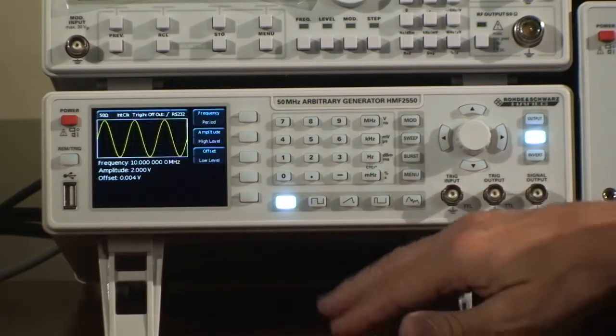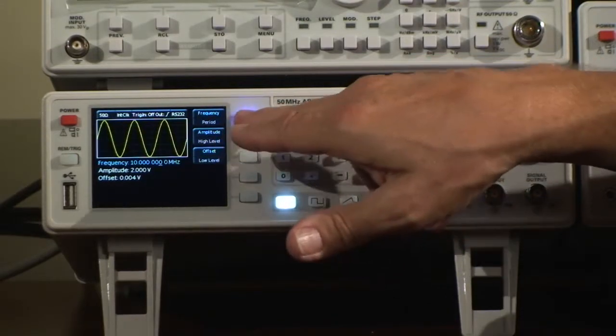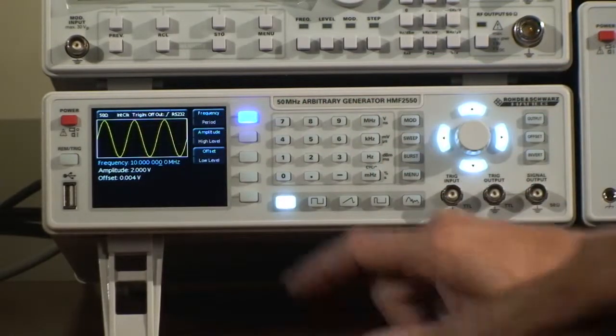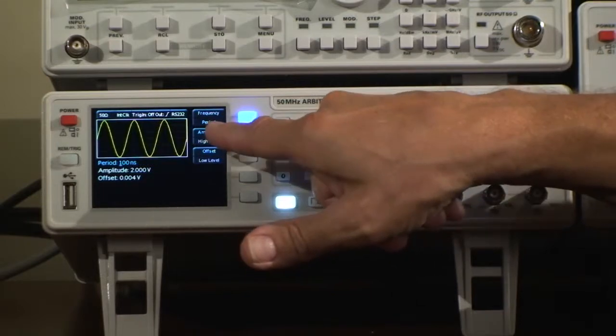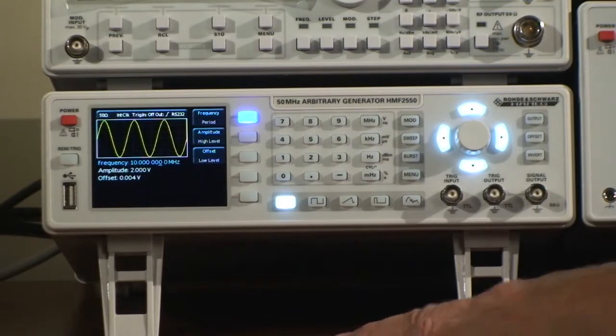The operation of the instrument is almost like reading a book. You press the button over here. Now highlighted is the frequency. It could also be that you highlight period which will give you the associated parameters with the frequency and period.